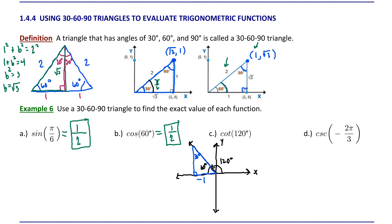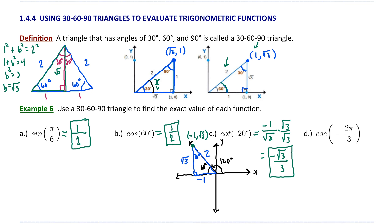The vertical segment opposite the 60-degree angle is square root of 3, positive, because y is positive in quadrant 2. The hypotenuse has a length of 2. Now we can evaluate cotangent of 120 degrees. A point on the terminal side of 120 degrees is x equals negative 1, y equals square root of 3. Remember cotangent is x divided by y, so we have negative 1 divided by square root of 3. Rationalizing the denominator, we end up with negative square root of 3 over 3 as the exact value of cotangent of 120 degrees.